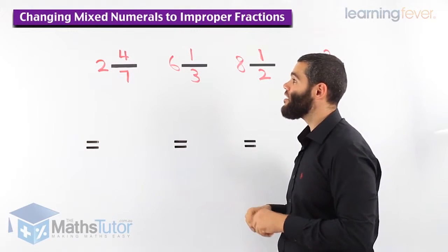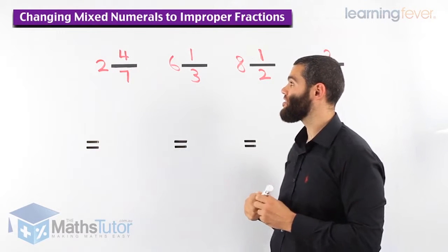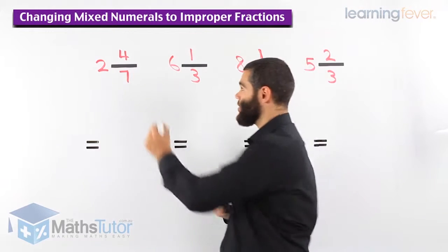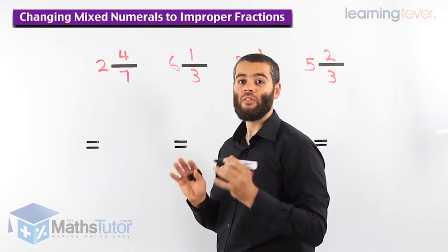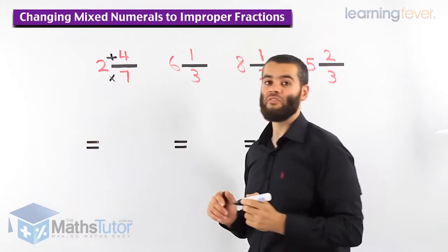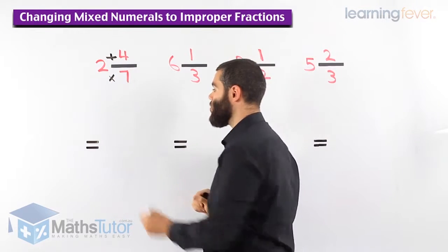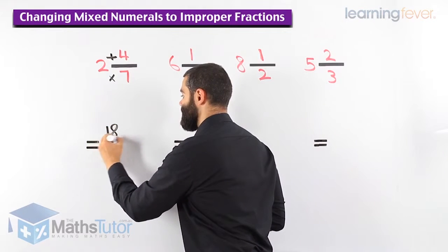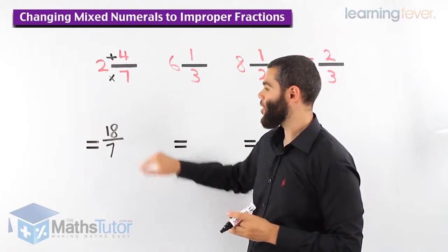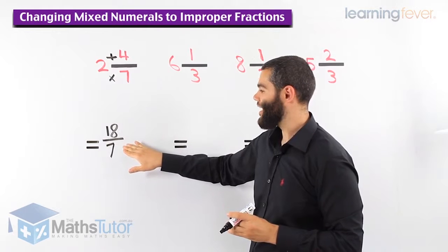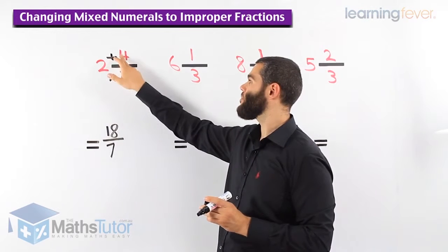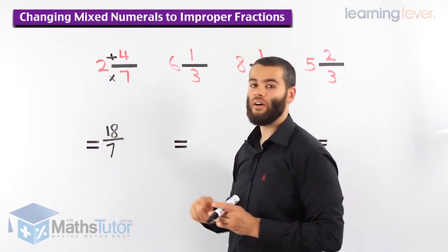We have 2 and 4 over 7 — 2 is a whole number and 4 over 7 is the fraction. We would like to change this mixed numeral to an improper fraction. We start with the denominator, which is 7. We simply follow this process: denominator times whole number, then plus the numerator. 7 times 2 is 14, and 14 plus 4 is 18, giving us 18 over 7. The denominator stays the same.